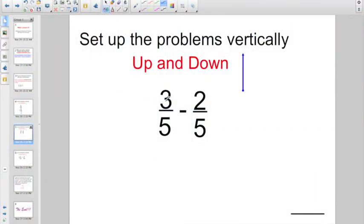Check out this one. Three-fifths minus two-fifths. I don't even know if we have to go through all the hassle of setting that one up vertically. What's three minus two? That's one. And the denominator stays the same. One-fifth.